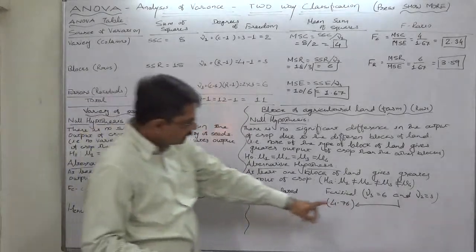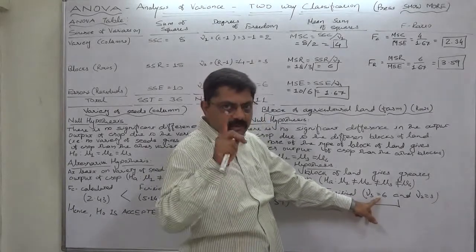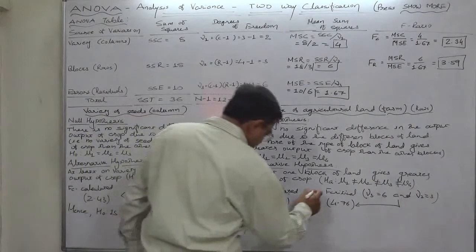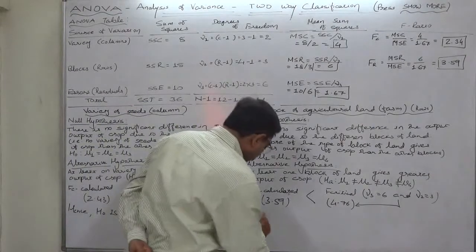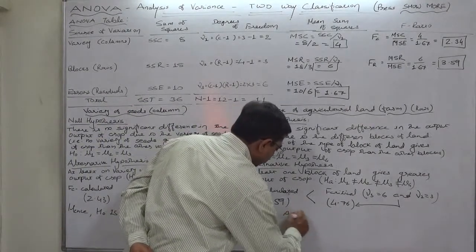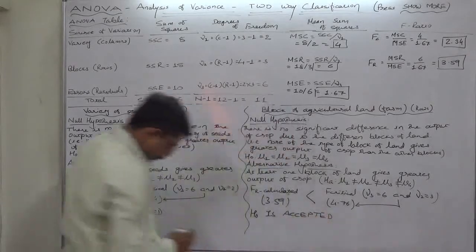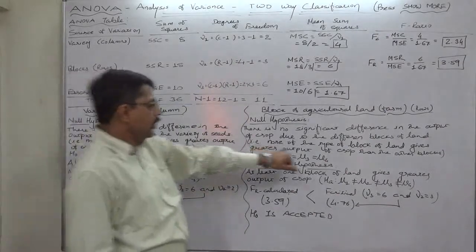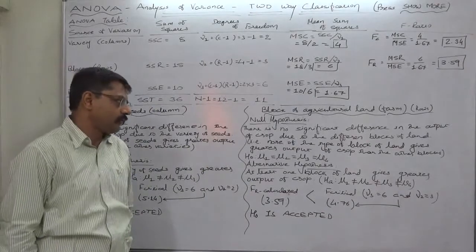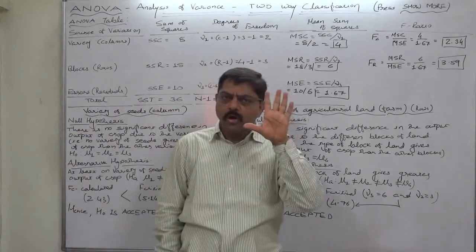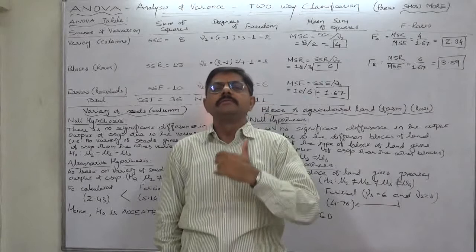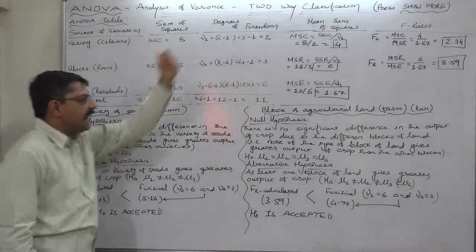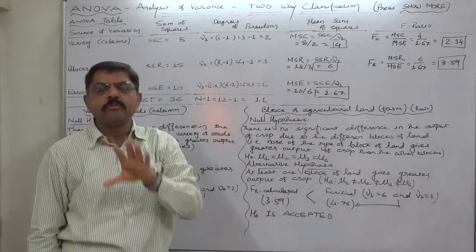For blocks of land, the calculated F-ratio is 3.59. Since the number of columns and number of rows are not equal, the critical value of F is also different. We find the critical value based on ν₃ (degrees of freedom for errors) and degrees of freedom for rows or blocks, and that is 4.76. Again in this case the calculated F is less than the critical value, so the null hypothesis is also accepted here.